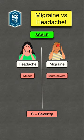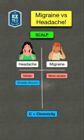Next is C for chronicity. Headaches tend to be shorter in duration lasting several hours, while migraines typically have a longer duration lasting for hours to days.